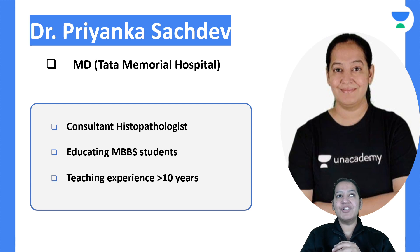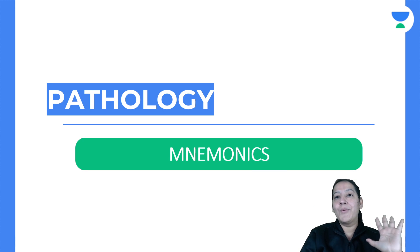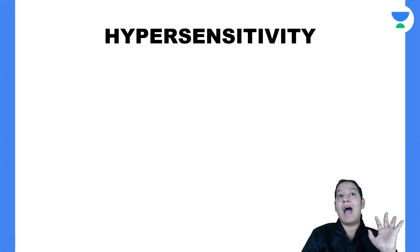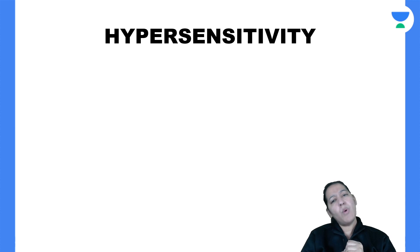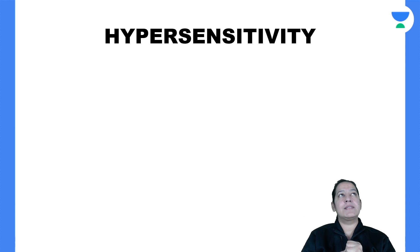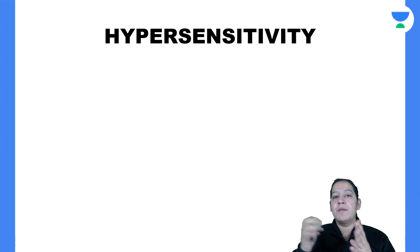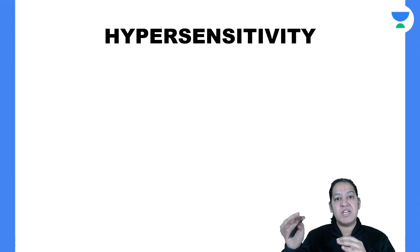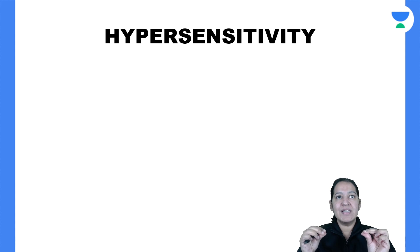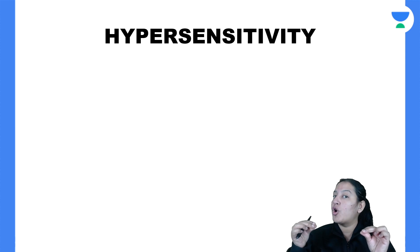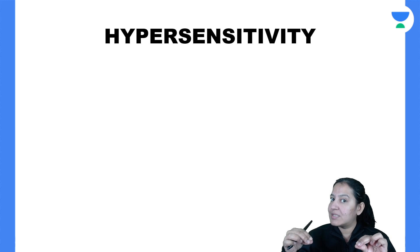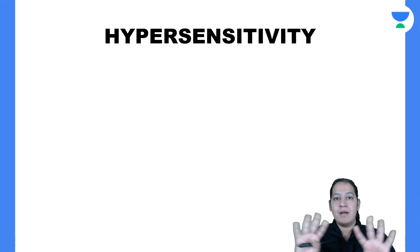Now let me come to the mnemonic. The mnemonic of the day is on hypersensitivity reactions. So what is hypersensitivity? Hypersensitivity is an exaggerated, over-response of the normal immune system which is undesirable — it is an overstimulation of the normal immune system, and this response is undesirable.